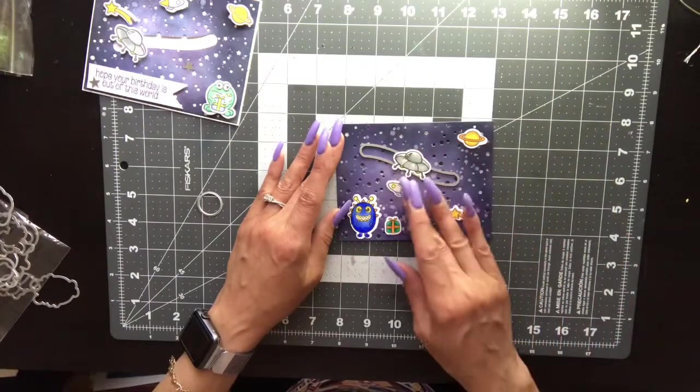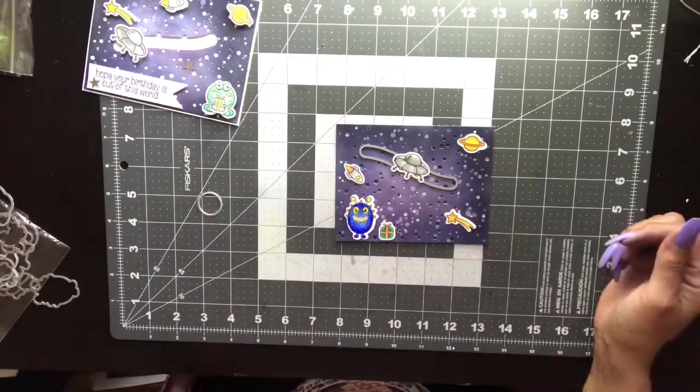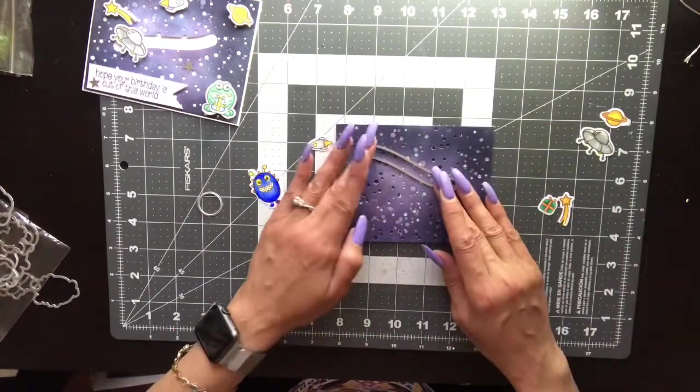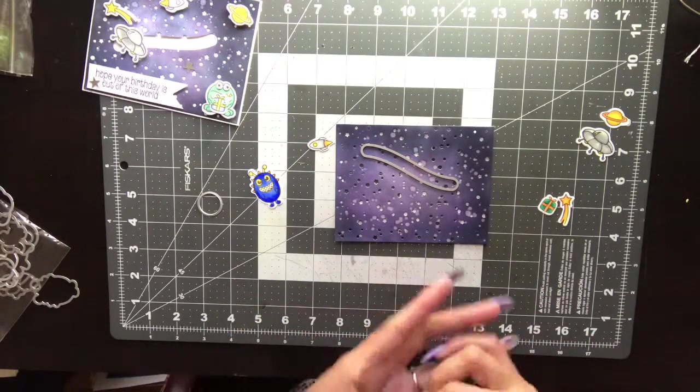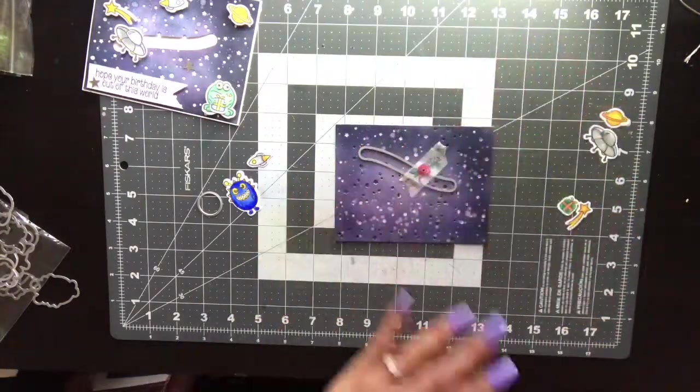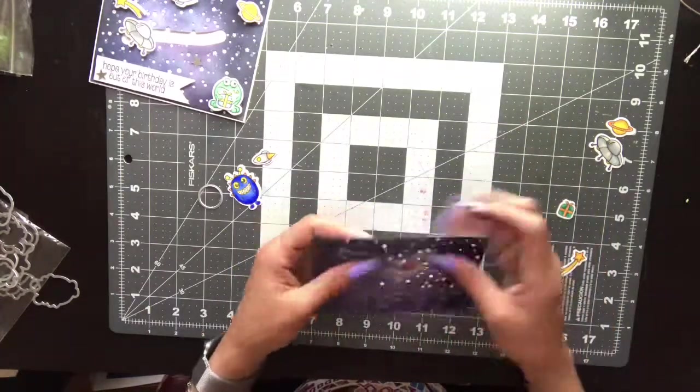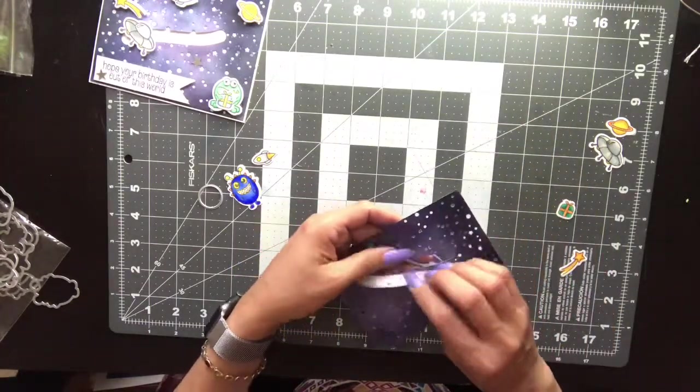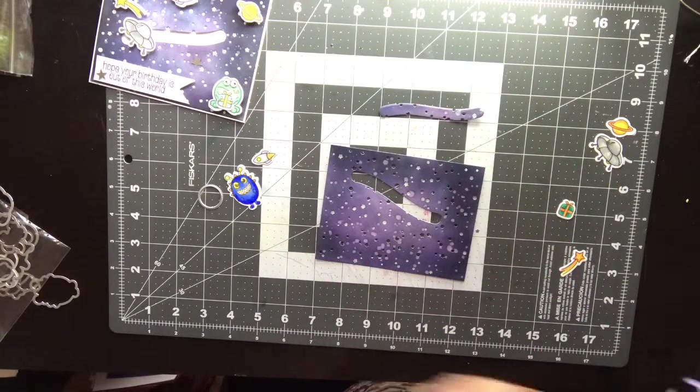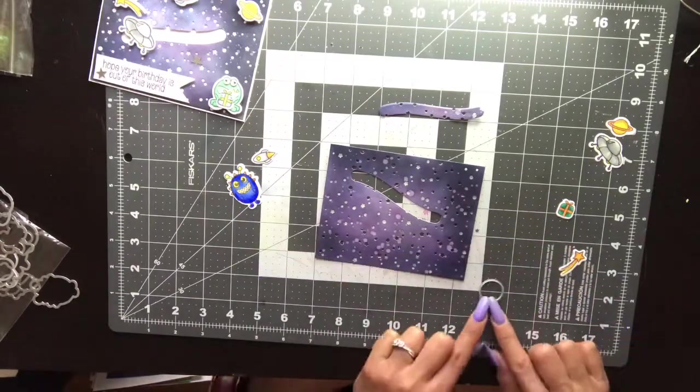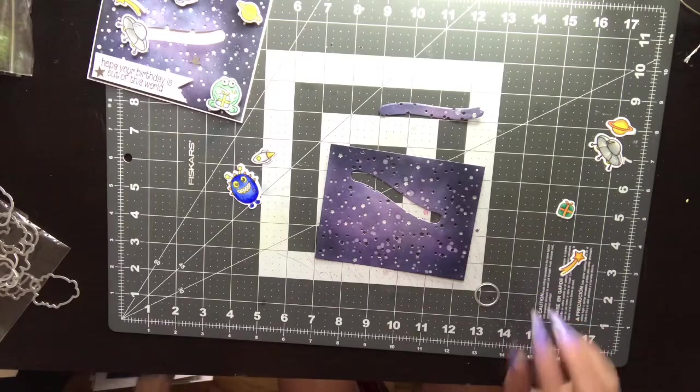I'm going to take another little piece of washi tape and secure that right before I run it through the machine. We're gonna cut that piece out. Now the first time I did this card I didn't keep the piece that I had cut out, which is why that white streak is showing on the first card. In hindsight I felt that I should have kept it just to give it a seamless look.